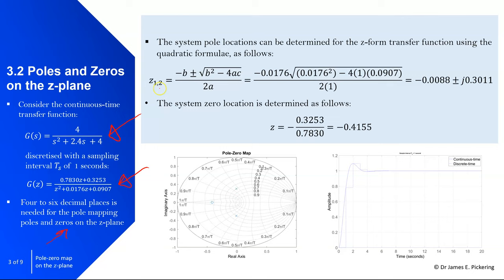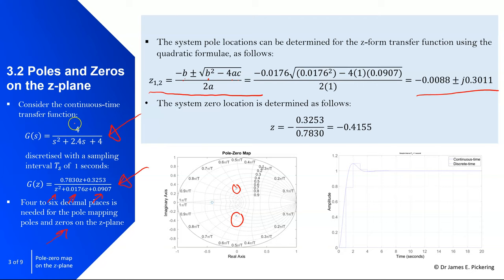To work out the poles we use the quadratic formula, where a = 1, b and c are given by the transfer function coefficients. Substituting those values gives us a pair of complex conjugate poles. We can also work out the zero — when you discretise a second-order continuous time transfer function, you actually introduce a zero, which is a root on the numerator.